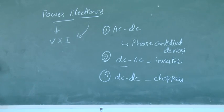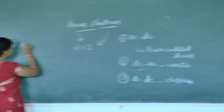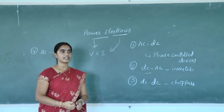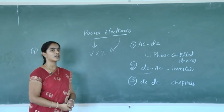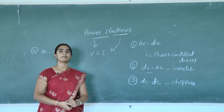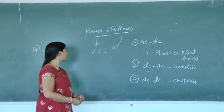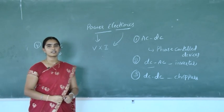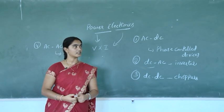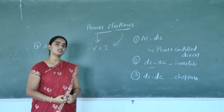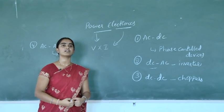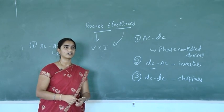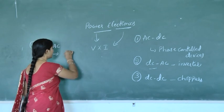The fourth conversion is AC to AC converters. Here we have two power electronic devices depending on frequency. If the requirement is to convert fixed AC to variable AC without changing frequency, then we go for AC voltage controllers.